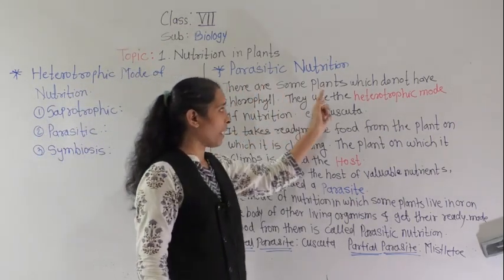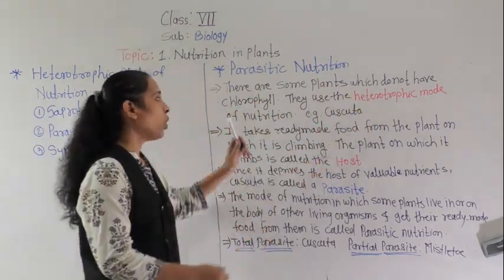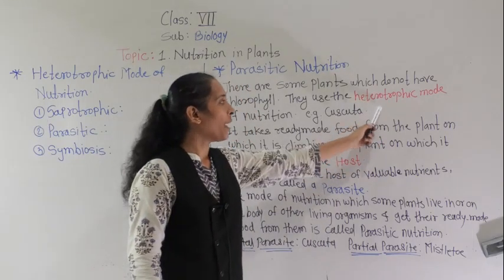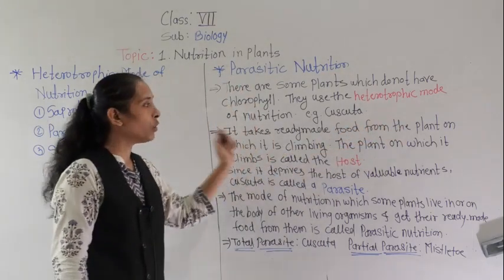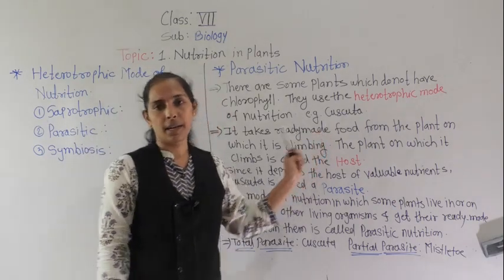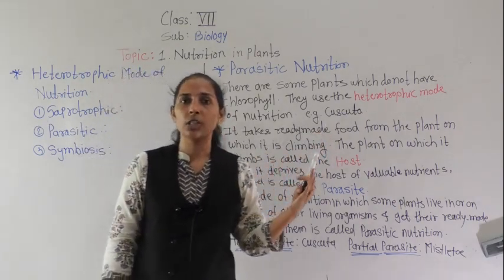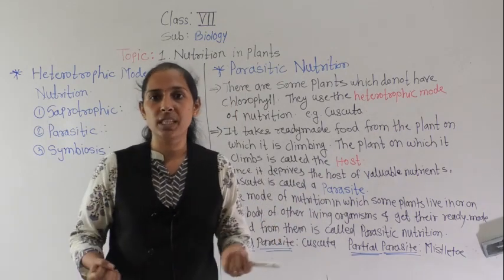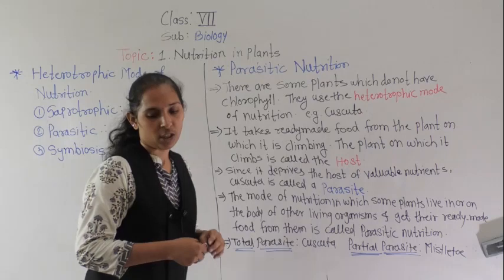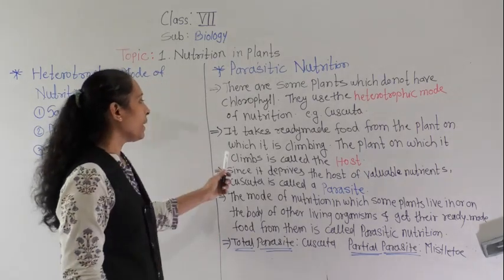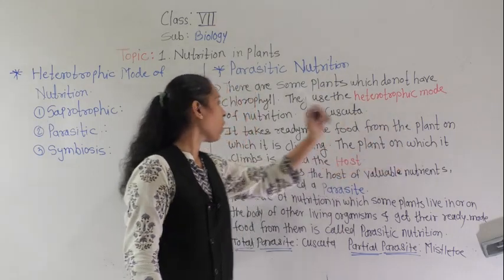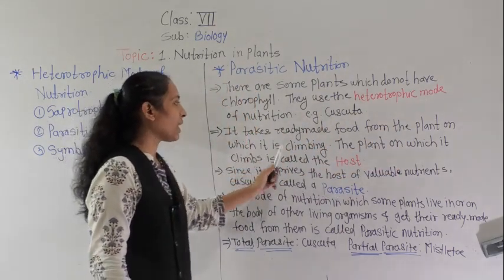There are some plants which do not have chlorophyll, and that is the reason they are following the heterotrophic mode of nutrition. For example, we can say the cascuta plant — yellowish, long thread-like twines that get coiled around the stems or branches. It takes ready-made food from the plant on which it is climbing.